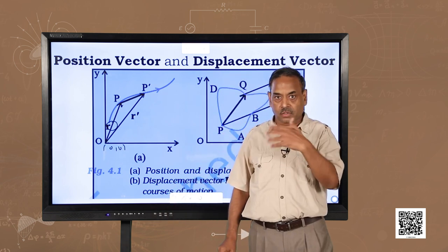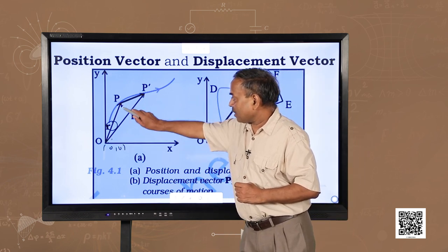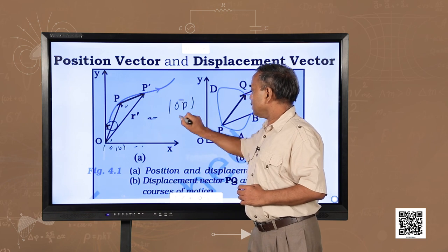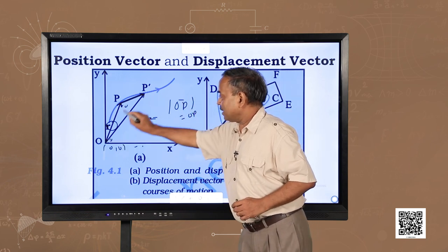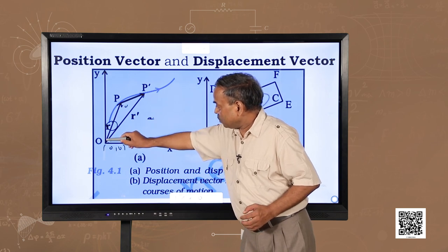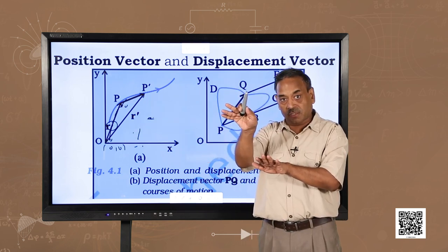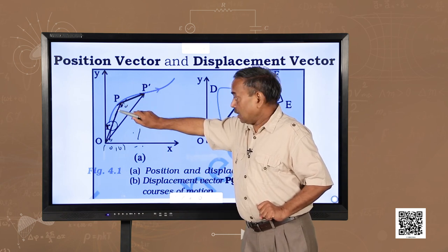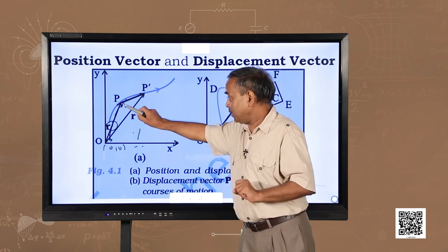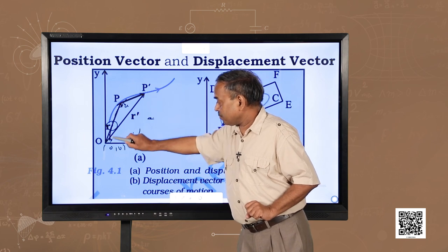The object reaches point P, travelling by a vector quantity called R. R or S are the normal general notations for displacement. The vector OP, whose magnitude is the length of OP — how long it is — is the magnitude of this vector. This vector OP is the position vector at time T.